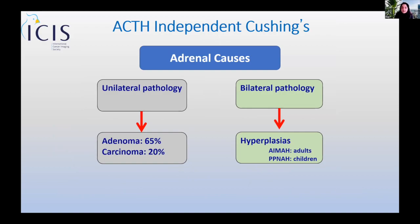Moving on to Cushing's disease: adrenal causes will always be in the context of ACTH-independent disease. If ACTH levels are high (ACTH-dependent), causes are not adrenal — you're dealing with pituitary disease or an ectopic ACTH producer. In adrenal disease, ACTH will be reduced because of autonomous cortisol production from the adrenal gland. This can happen via a unilateral lesion — usually adenoma or carcinoma — or bilateral pathology, usually congenital hyperplasia, massive adrenal hyperplasia in adults, or pigmented multinodular hyperplasia (Carney complex) in children.